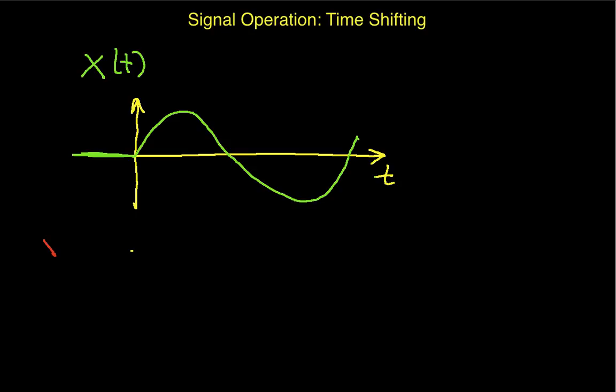And we're going to create another signal, y of t, which is equal to our x of t shifted by, let's arbitrarily say a value of one. And in order to have this make sense, I guess I'd better put some, we'll call this π, we'll call this 2π, which means that 1 is right about here, minus 1 is right about here, and so on.